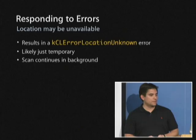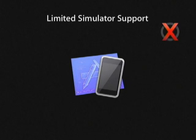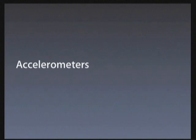Core Location has limited simulator support — you can compile against the libraries, but you won't get meaningful data from the delegate callbacks. As for what data comes back with a location: latitude, longitude, altitude (though cell and WiFi data don't have altitude and GPS can be spotty with it), horizontal accuracy, and a timestamp.